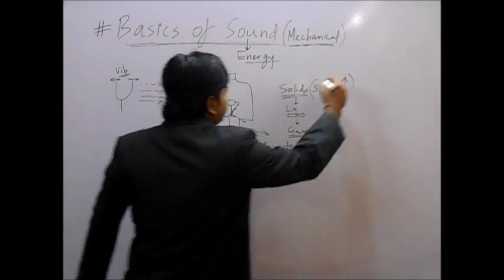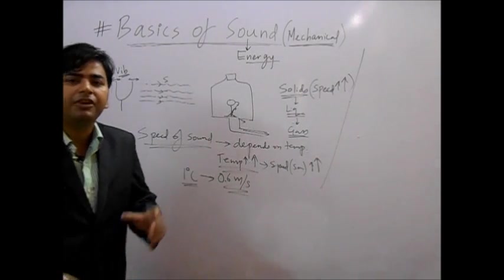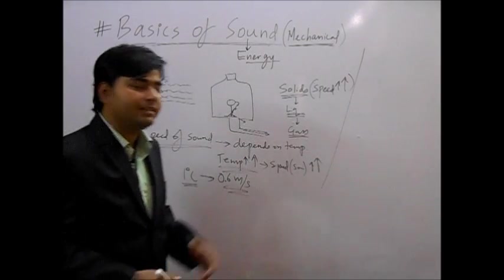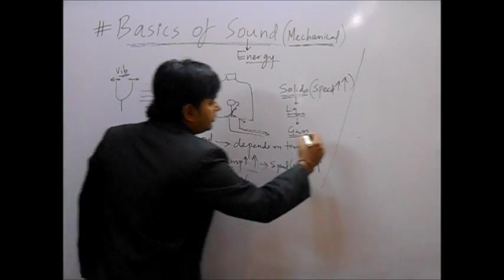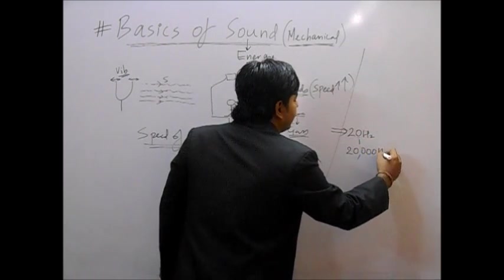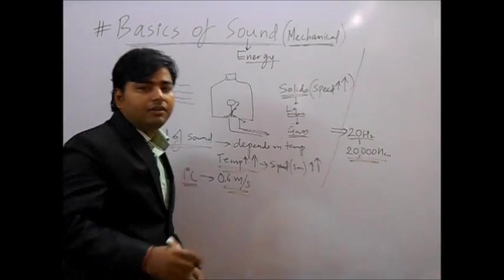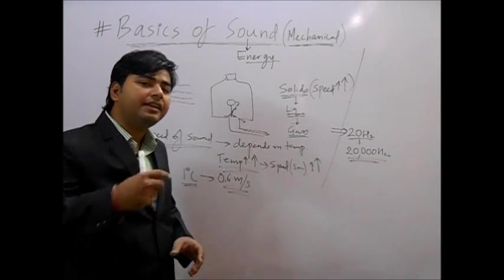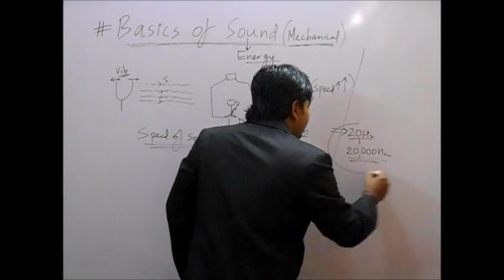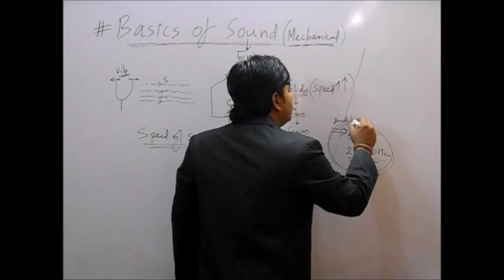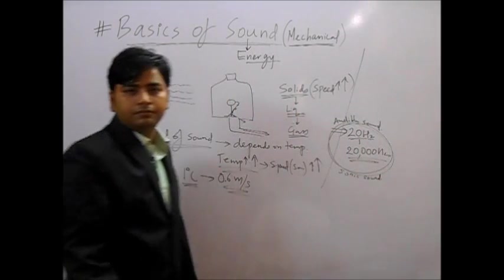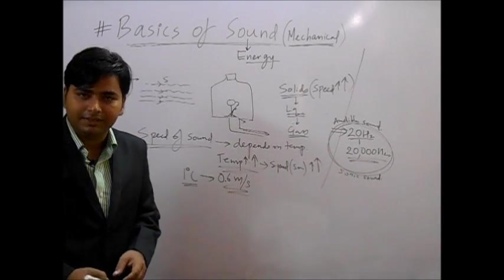Next term is your frequency. Frequency - we have studied in waves. Frequency, from any point, how many waves have passed in a second. That is frequency. And the sound that the human ear hears is 20 hertz to 20,000 hertz. So the audible sound, which is for human ear, for normal human ear, what frequency can we hear? So it is from 20 hertz to 20,000 hertz. So this range, what do we call it? This is called audible sound or sonic sound. 20,000 hertz, we can also say 20 kilohertz, right.